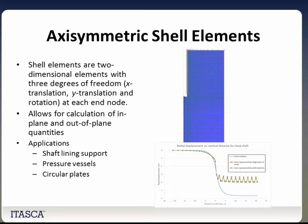Next we have a structural element that can be used in axisymmetric models: the shell element. Shell elements are two-dimensional elements with three degrees of freedom at each node. They allow for calculation of in-plane and out-of-plane quantities, with applications including shaft liners, pressure vessels, and circular plates.